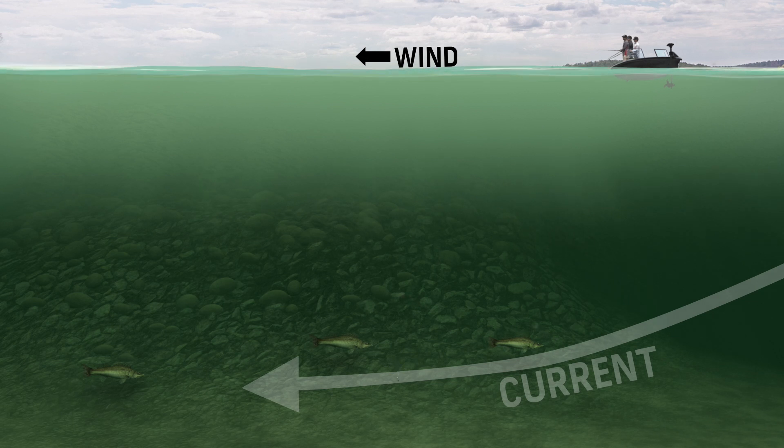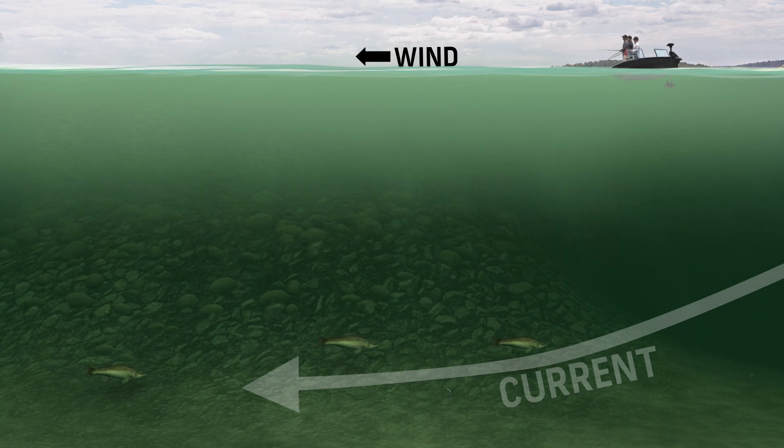The amount of resistance on the bait is going to indicate the direction of the current, and that will also be a good way to figure out how those fish are going to be setting up on the various structures.